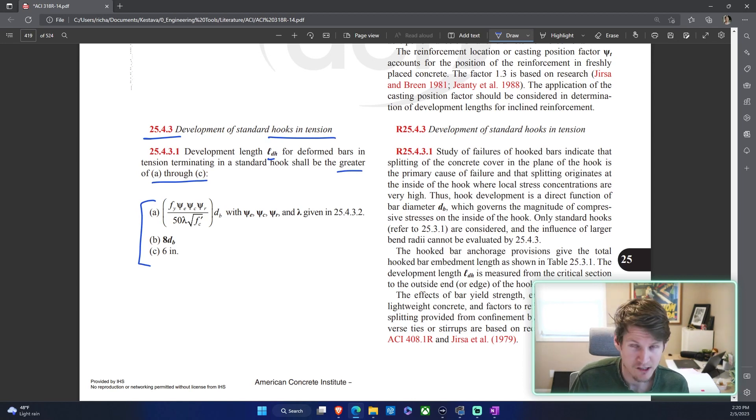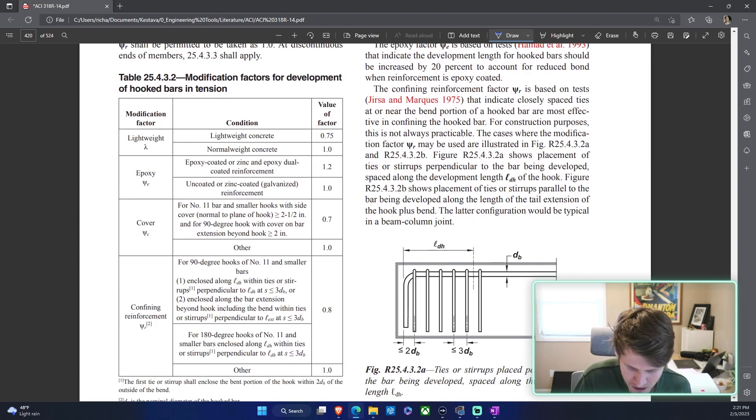They give us an ultimatum here for finding Ldh and we need to provide the greater of possibilities A through C. B is really easy - it's just eight times the diameter of your bar. C is just straight up six inches. I don't know when six inches works. A is obviously the one that needs all the additional calculations. It's not a lot though, so don't freak out. We need all of these variables, and it says right here, very straightforward, head to this section to find those variables.